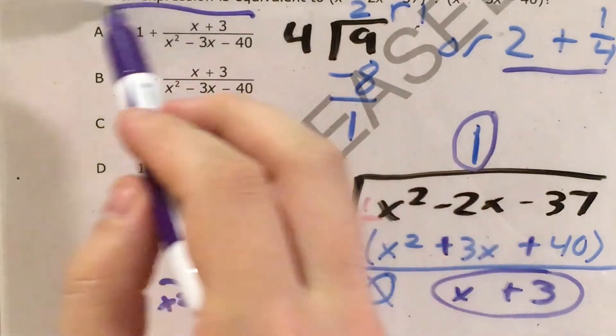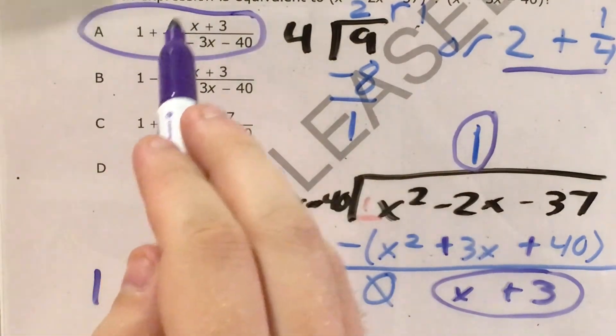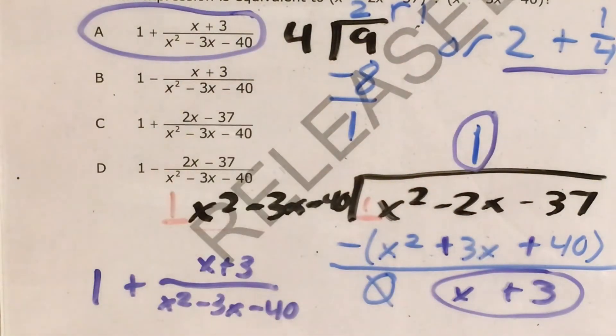Now I look at my answer choices for an answer that matches that. And it's actually going to be choice A. One plus x plus three divided by x squared minus three x minus 40.